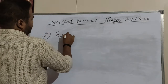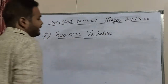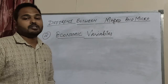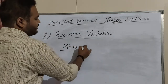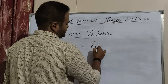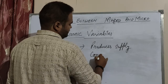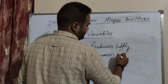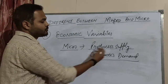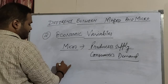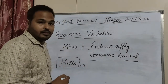Now the second topic: economic variables. Economic variables are different in microeconomics and macroeconomics. In microeconomics, the economic variables are producer supply and consumer demand. So when we study microeconomics, we study about the producer supply and consumer demand.